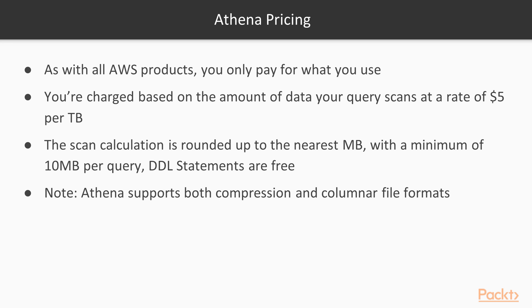In terms of pricing, as with all AWS products, you really only pay for what you use. With Athena, you're charged based on the amount of data that your query scans. So if you write a big SELECT statement, a big join, or a big aggregation that has to scan the entire dataset, Amazon will calculate how much data actually gets read into memory and then charge you based on that. With Athena, you're charged at a rate of $5 per terabyte. This scan calculation is rounded up to the nearest megabyte, with a minimum of 10 megabytes per query. In our examples, we're just going to be querying a file that's a few hundred kilobytes, but Amazon will round that up to 10 megabytes, which is still next to nothing.